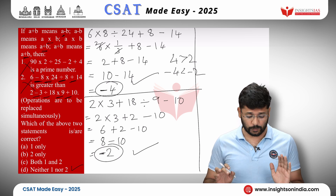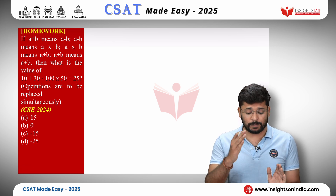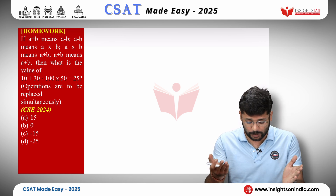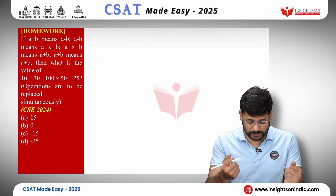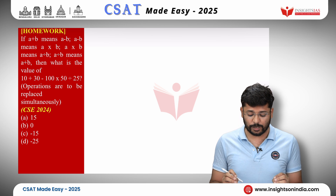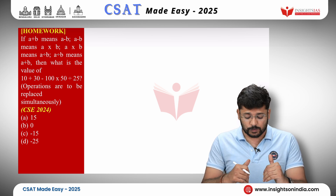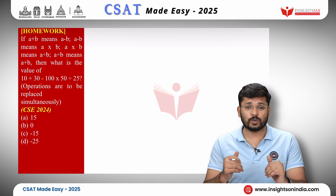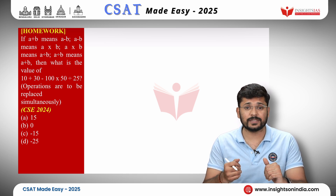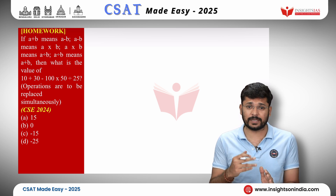Now we will go to your homework question. This question was asked in the 2024 exam. If A plus B means A minus B, A minus B means A into B, A into B means A divided by B, and A divided by B means A plus B — then what is the value of 10 plus 3 minus 100 into 50 divided by 25? Solve this and leave your answers in the comment section.